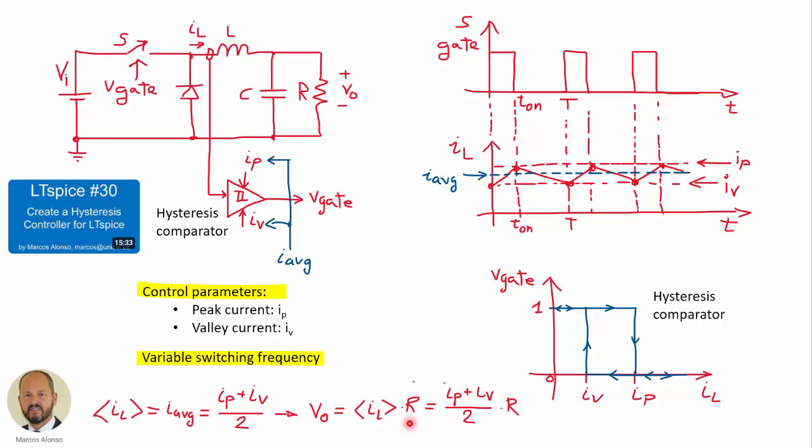This is a very simple methodology to control a DC-DC converter — very interesting. Today we are going to focus on the dynamic behavior of this control method and compare it with other control methods such as peak current mode control that we have seen in previous videos.